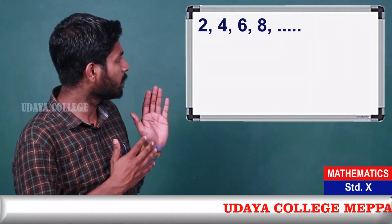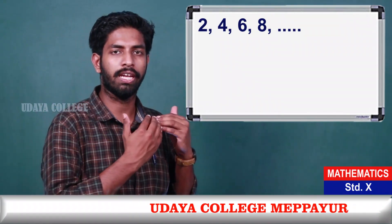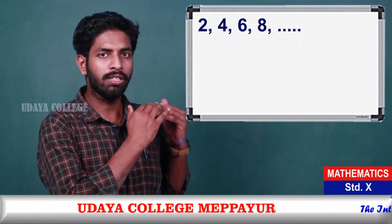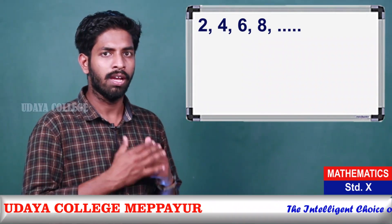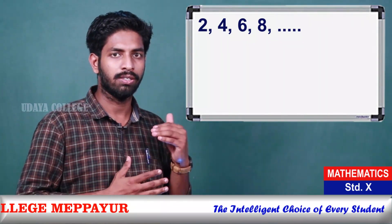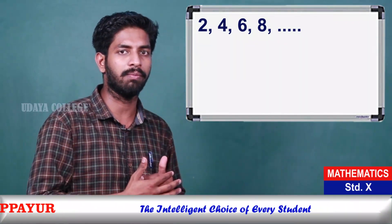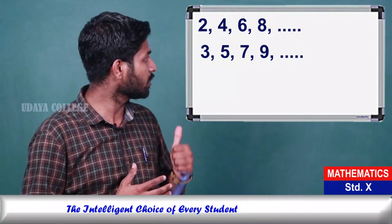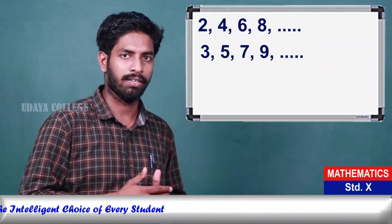If we say 2, 4, 6, 8, we have a pattern here. We will add 1 to each: 2, 4, 6, 8, we will add 1, giving 3, 5, 7, 9.